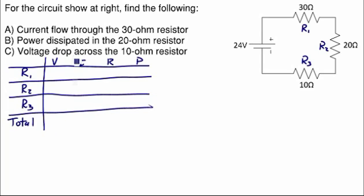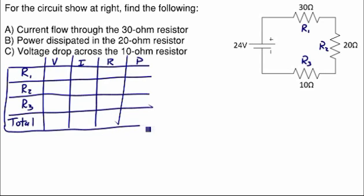Our first step is filling in what we already know about the table. Right away I can label the values of resistance for R1 that must be 30, for R2 that must be 20, and R3 that must be 10. I also know the total voltage in the circuit is 24 volts because that's the voltage of our battery.